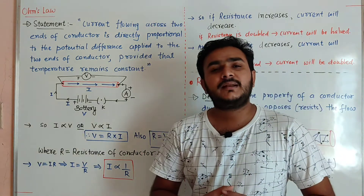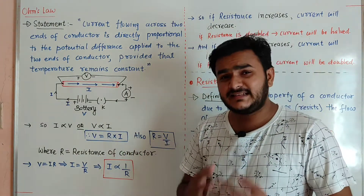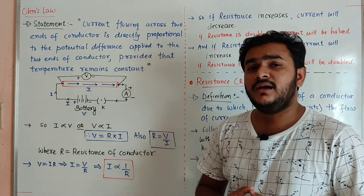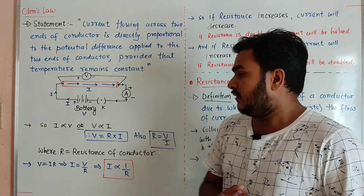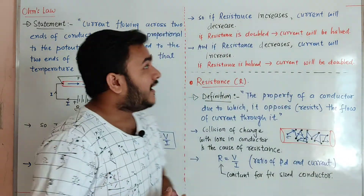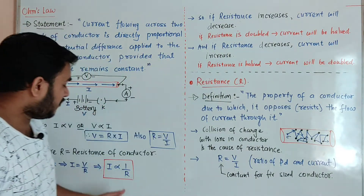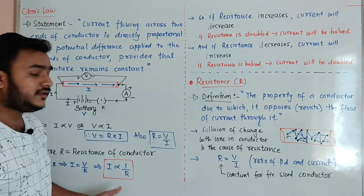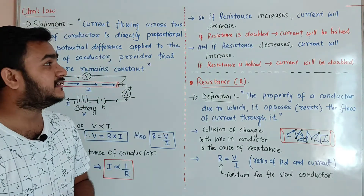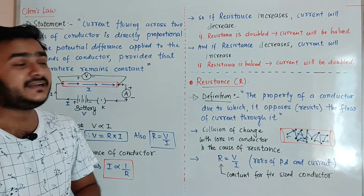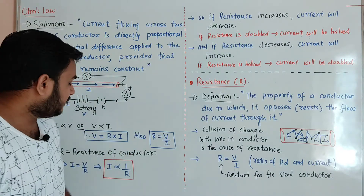That means the greater the resistance of the conductor, the lesser the current will flow through it. If resistance increases, the current will decrease. From this particular equation, I can say that if the resistance increases, current will decrease. That means if resistance is doubled, the value of current will be halved.